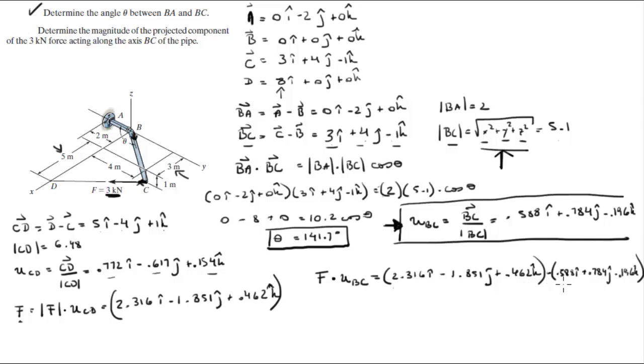So 2.316 times 0.588 is equal to 1.362, minus 1.851 times 0.784 is 1.451, which is negative because negative times a positive is a negative, and 0.462 times negative 0.196 comes out to be negative 0.091.